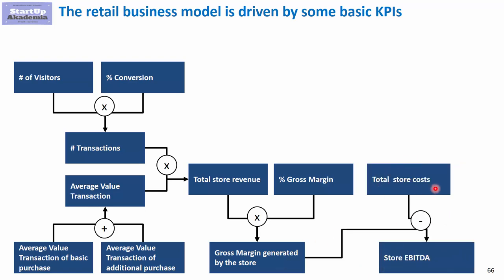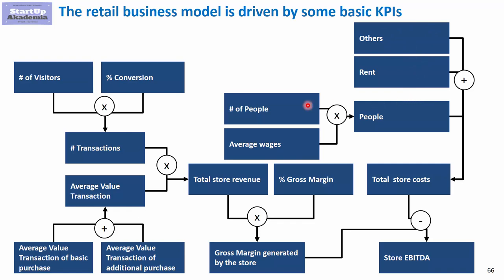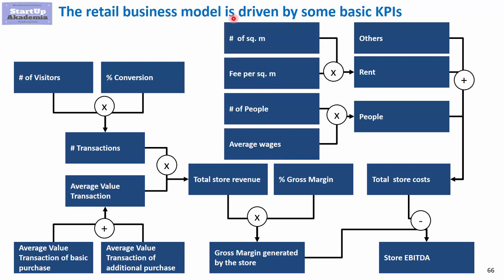Total store costs depend on three things: people and rent — which are always the biggest cost items — and others. Rent and people are each driven by specific drivers. For people, it's the number of staff required for the format to work and the average wages we pay them. For rent, it's the number of square meters and the fee per square meter we pay.